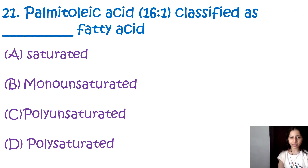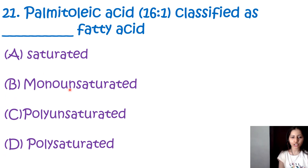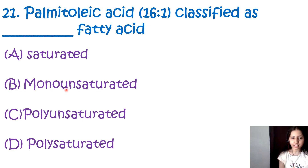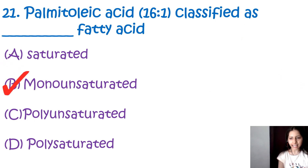Question number 21: Palmitoleic acid (16:1) is classified as which type of fatty acid? Options are saturated, monounsaturated, polyunsaturated, and polysaturated fatty acids. Since 16:1 means 1 double bond, it is a monounsaturated fatty acid — 'mono' means one, so one double bond equals monounsaturated. The correct option is B, monounsaturated fatty acid.